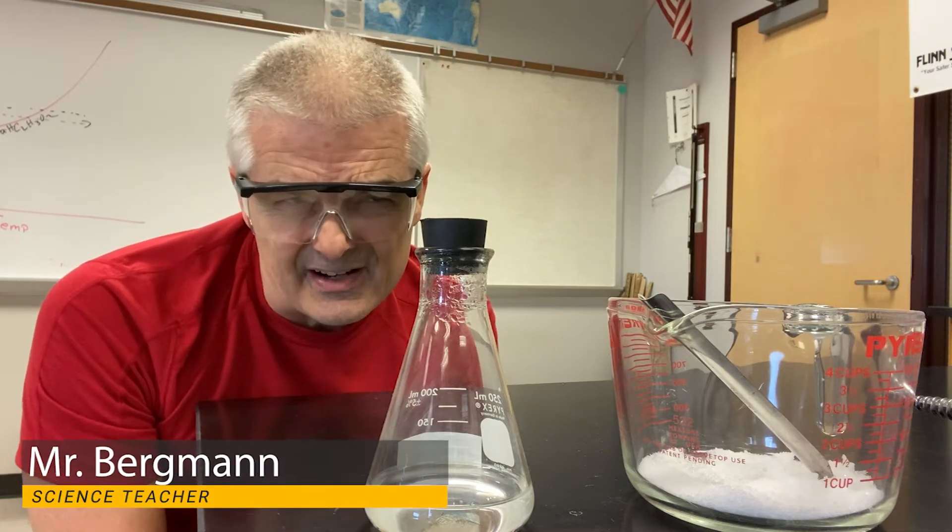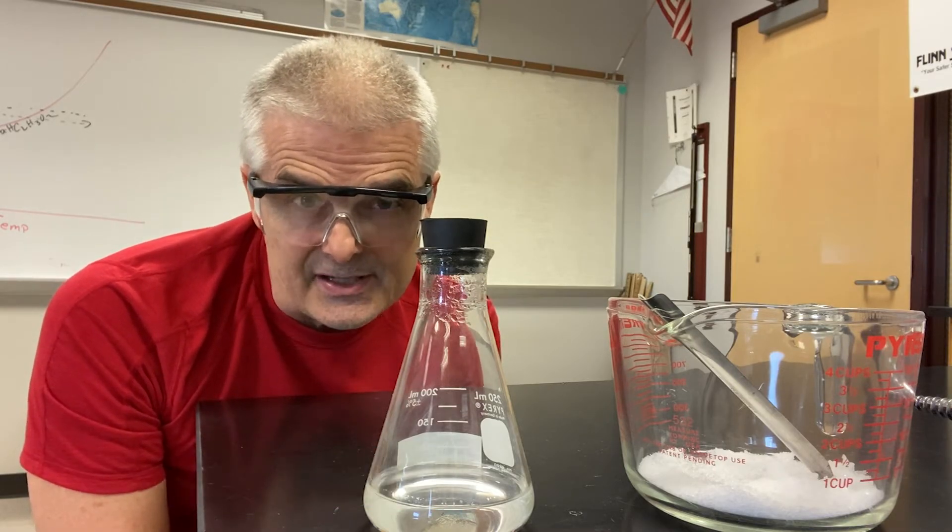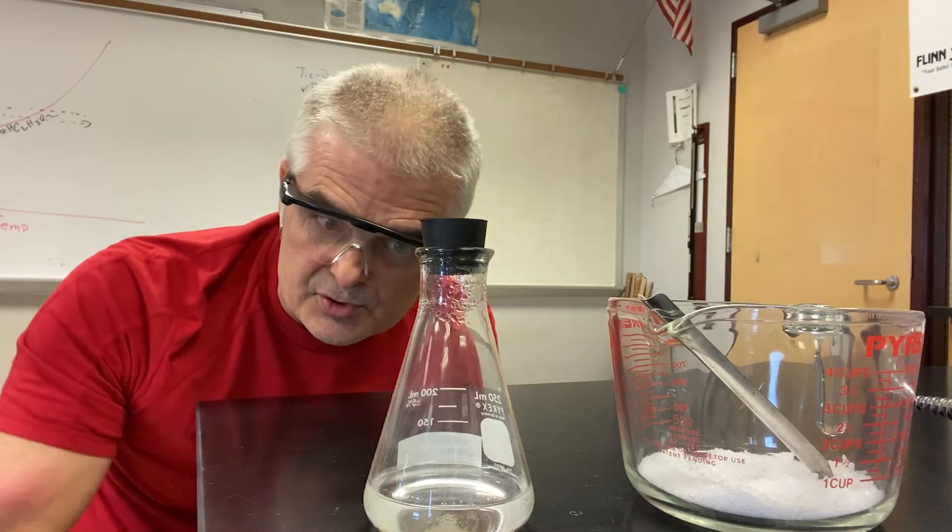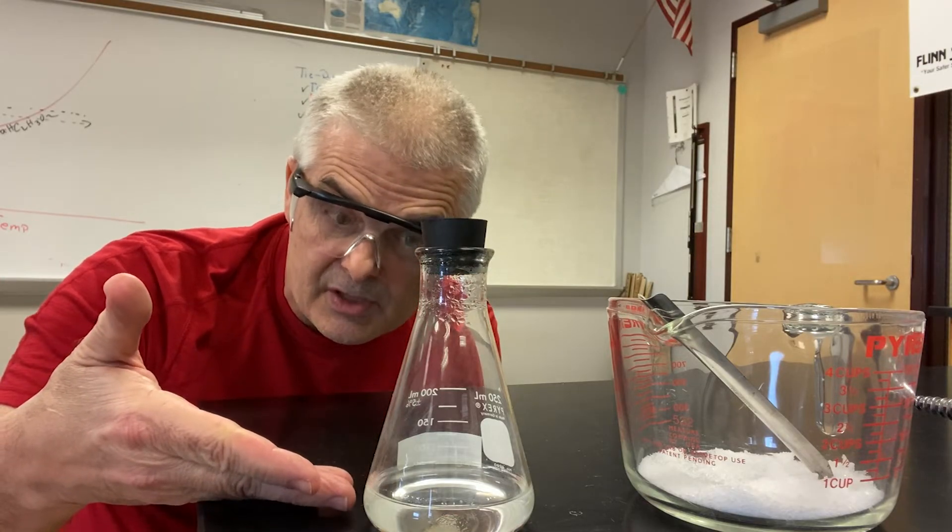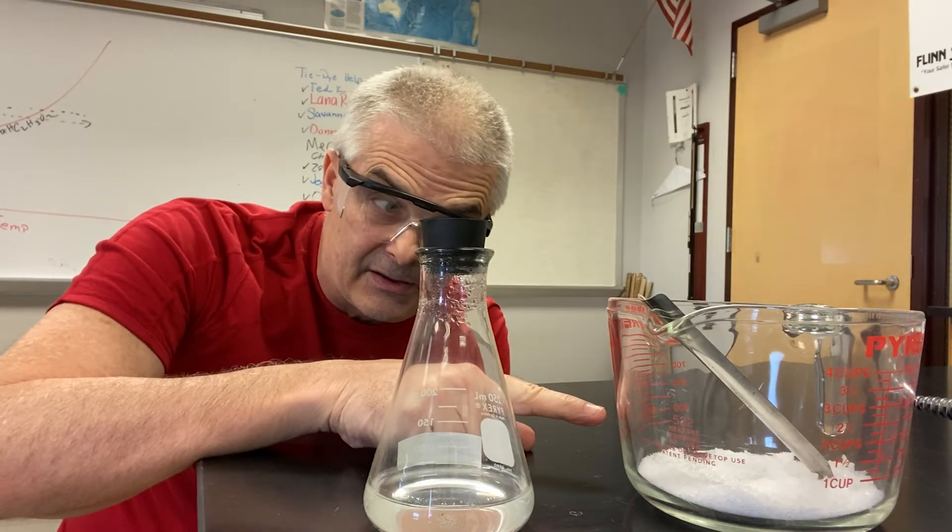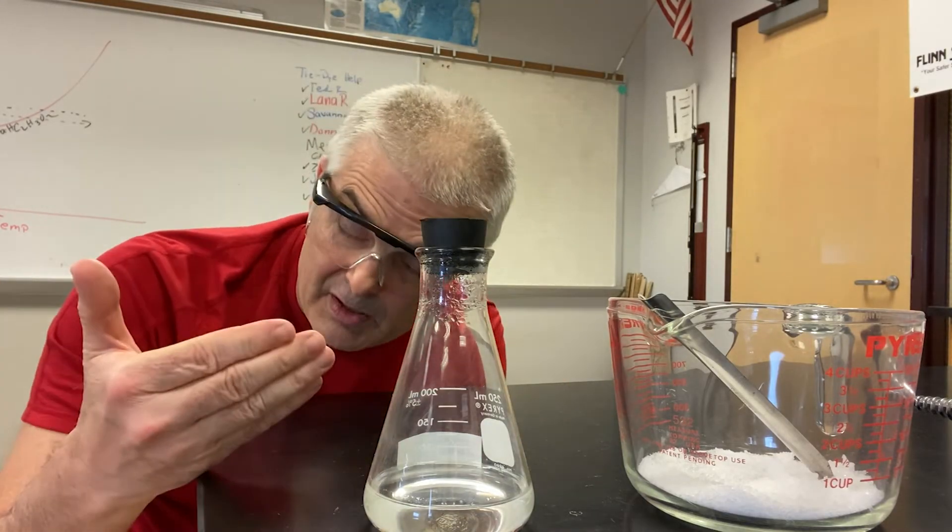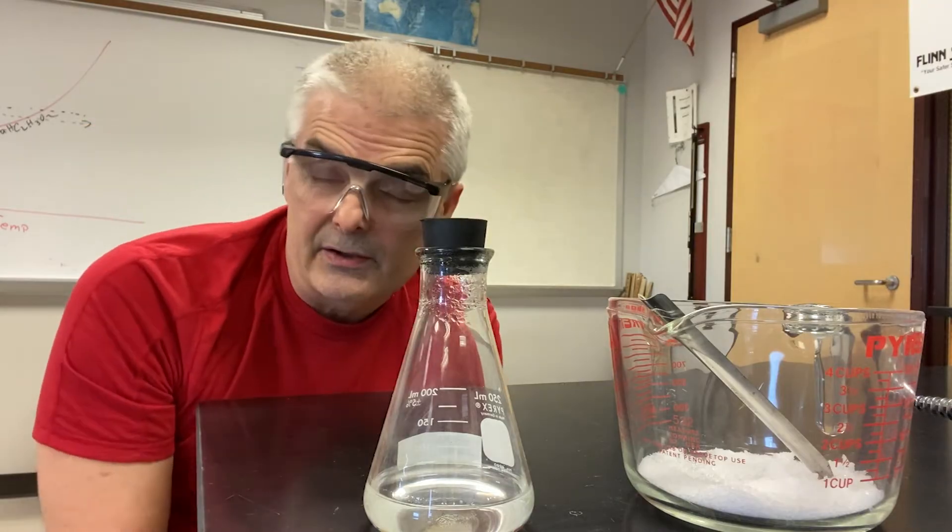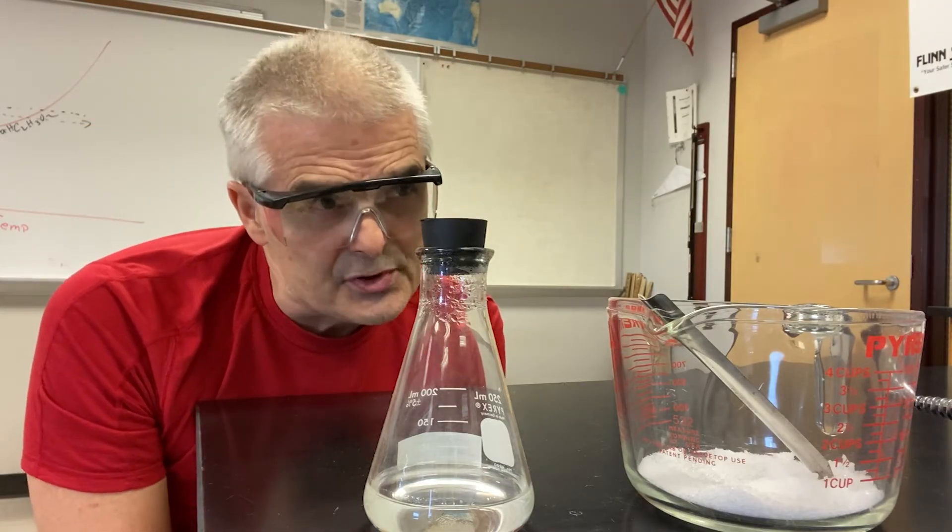Supersaturation is kind of a weird phenomenon in the world, and it's kind of hard to make a supersaturated solution. Here I have a supersaturated solution of sodium acetate, and this is sodium acetate in the big container right here. It's a white powder. So I put the white powder in, I added water, but how do you make it supersaturated?